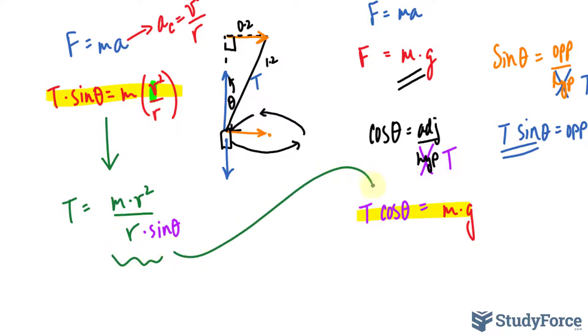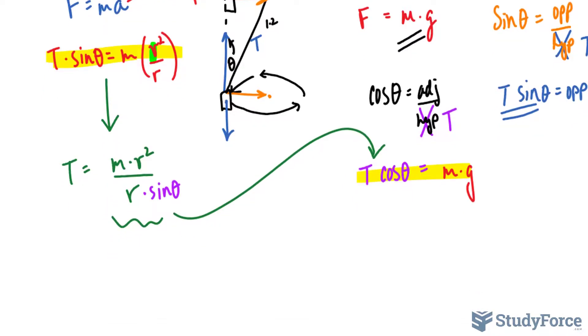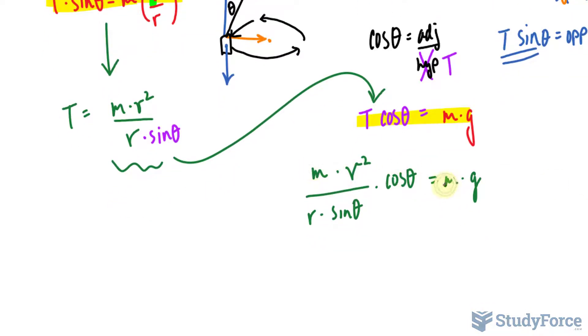Now I'll take that and throw it into there, where I have m times v to the power of 2. Apologies for the weird way that I'm writing these letters. Over r times sine theta times cosine theta is equal to mg. Interestingly, we have an m on this side and m on this side, so if we divide both sides by m, that goes away. We don't even have to worry about the mass of this object. It's not even important here.